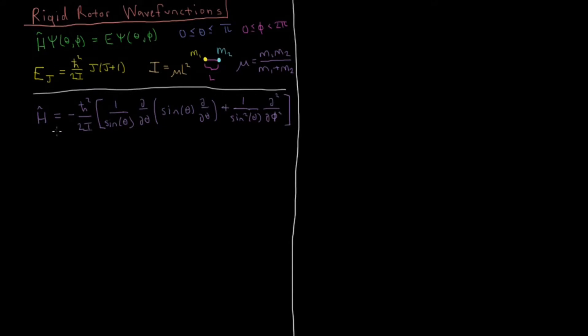And our Hamiltonian is just the kinetic energy, there is no potential energy, kinetic energy expressed in spherical polar coordinates for our Laplacian operator. And the part that depends on r has been removed because we have a fixed r, thus the rigid part of our rigid rotor.